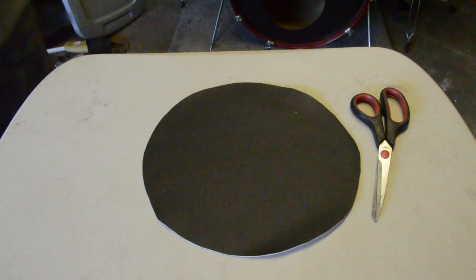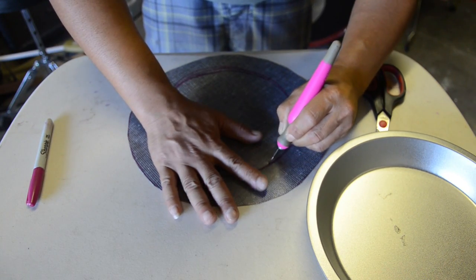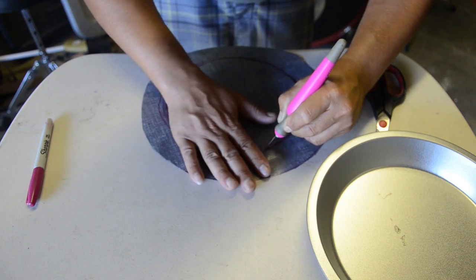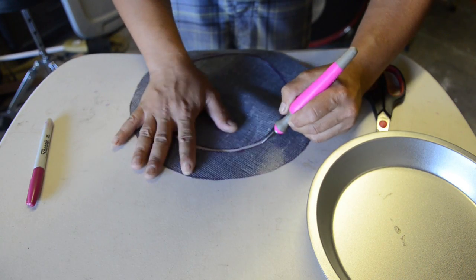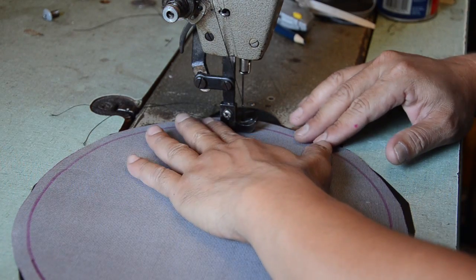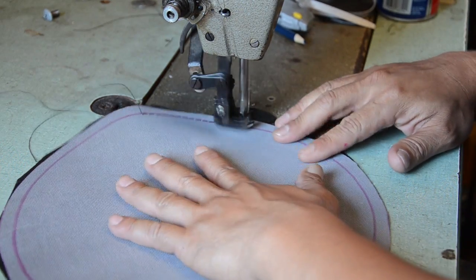There you go. Right here I got another piece - this is going to be the bottom piece of the vinyl. It's going to be the same outside diameter and I'm going to sew them together facing each other, the material part or the texture part facing each other.